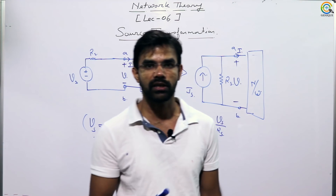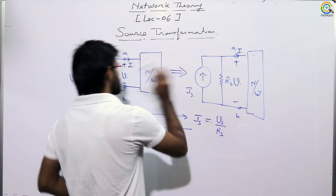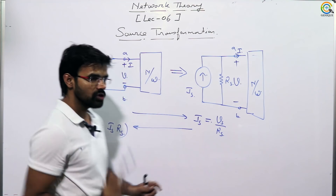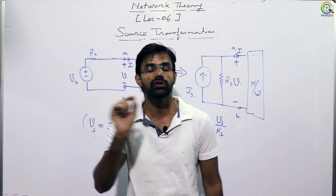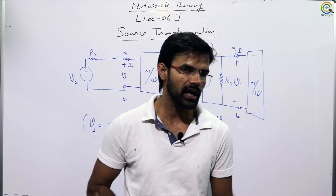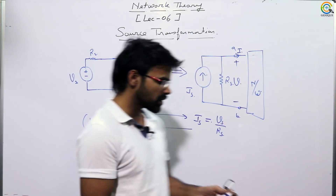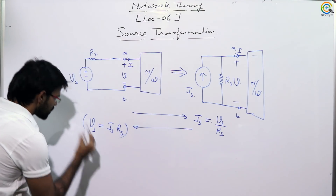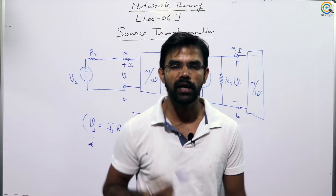When doing source transformation, the first point is: when you are using source transformation, the conditions remain the same — the voltage or current response across the AB terminal must be preserved. Source transformation cannot be applied to ideal sources.